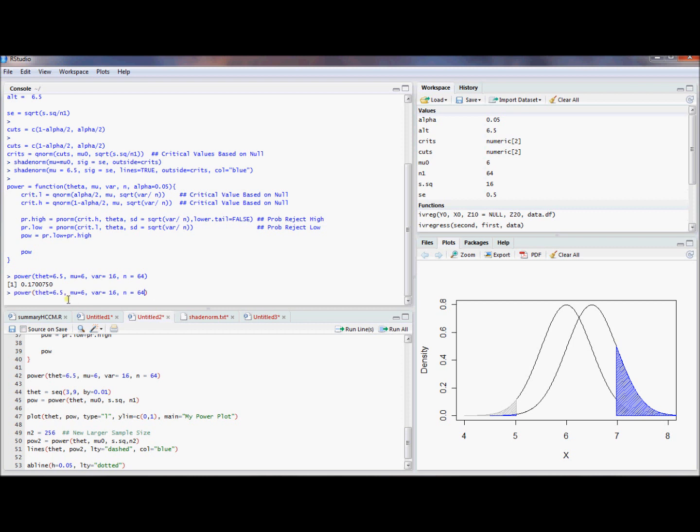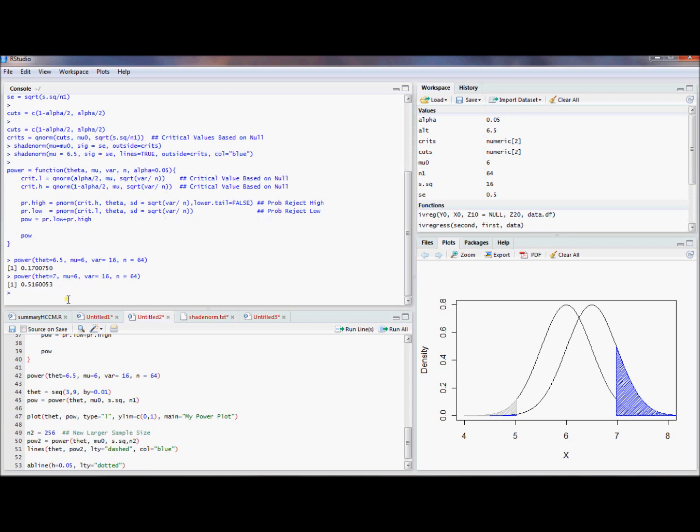So compare that to, for example, what's the probability I reject if the truth really was 7, but I'm testing a null hypothesis that the mean is 6. It's much higher. It's .51 instead of .17. And so as you get farther away from the null hypothesis, you're going to get larger and larger values.